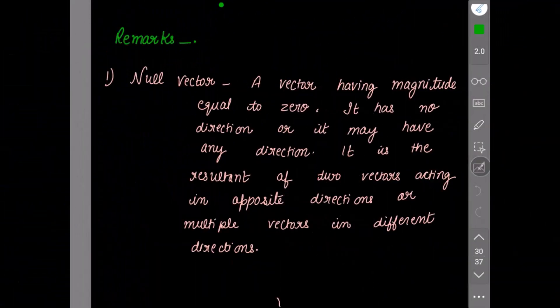Remarks. First one is null vector. A vector having magnitude equal to zero is a null vector. It has no direction, or it may have any direction. So it is the resultant of two vectors acting in opposite directions or multiple vectors in different directions. For example, two people pulling a rope in opposite directions with equal force.